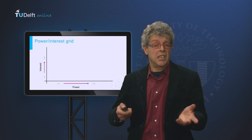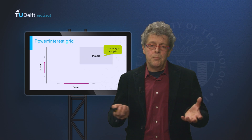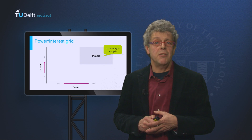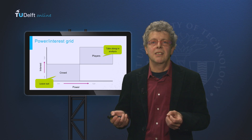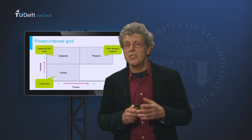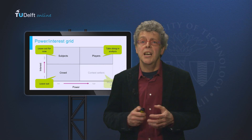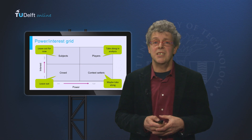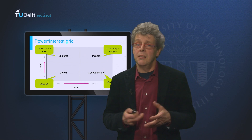When we have positioned our actors in the grid, consider the parties in the top right as players — they hold important means and have interest in the subject. Those are the parties that should be taken along. The ones on the bottom left are considered crowd — they have neither interest nor means, so we can ignore them. The top left are labeled subjects — they may be interested or affected but have low power, so we leave them out for now, though we can add them later if needed. Finally, at the bottom right we have the context setters — they have important means that you might need to solve the issue but are not very interested yet. If that changes, you should definitely take them along.